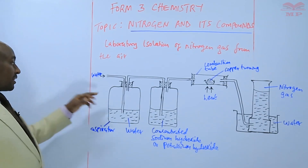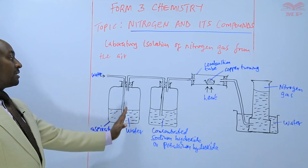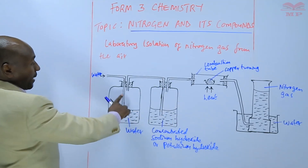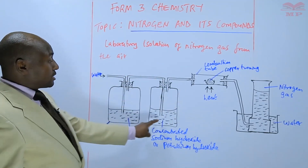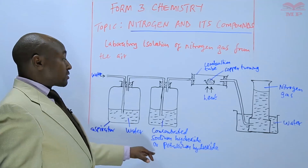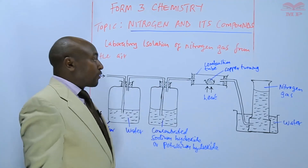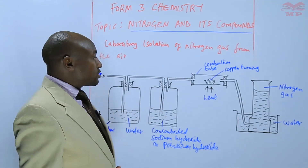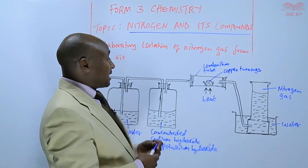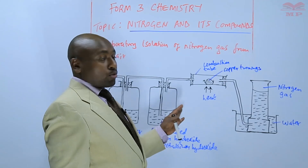The aspirator is empty — you put water. As the water gets in, it expels the air towards the right, where it is taken to the second aspirator containing concentrated sodium hydroxide or potassium hydroxide. Here, carbon dioxide is absorbed. Then the air minus the carbon dioxide is passed into a combustion tube containing hot copper turnings. The copper turnings react with oxygen in the air, leaving only nitrogen and the noble gases.